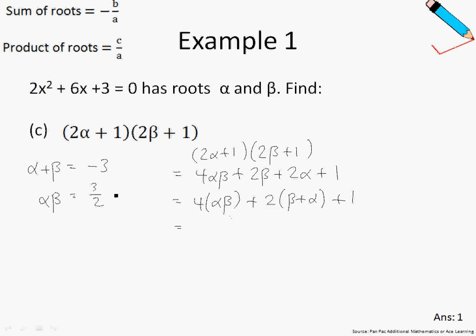So at this point in time, I can perform my substitution. So αβ is 3/2, so 4 times 3/2. And β+α is the same as α+β, which is just -3. Substituting all this, or rather calculating this using our calculator, I'll just arrive at the final answer, which is 1.